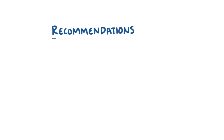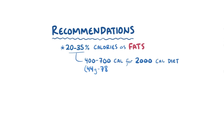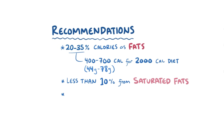The National Academies of Medicine recommends consuming 20-35% of daily calories as fat — for a 2,000 calorie daily intake, that comes out to between 400-700 calories from fat, or about 44-78 grams. It's not just about the amount of fat we eat; the type also matters. The World Health Organization and the US Dietary Guidelines recommend that less than 10% of daily calories come from saturated fats, and that trans fat consumption should be kept as low as possible.